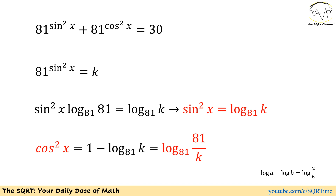Instead of 1, we are going to use log of 81 in base 81. Then we have log of a minus log of b, which we write as log of a over b. Replacing values, we end up with cosine squared of x equals log of 81 over k in base 81.